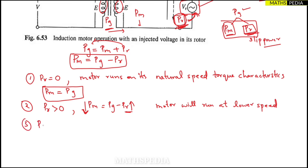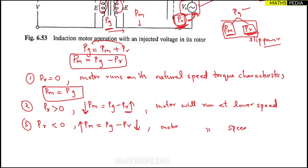Case 3: When PR is less than zero. Since PM = PG − PR and PR is negative, PM becomes larger than PG. This means the motor will run at a speed higher than synchronous speed.